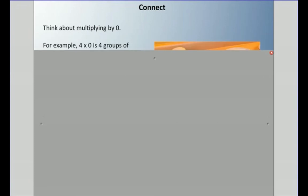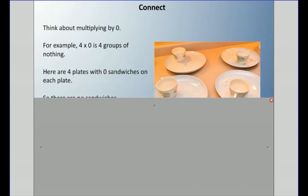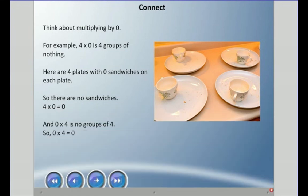What about multiplying by zero? Four times zero is four groups of nothing. If you had four plates with zero sandwiches on them, you have no sandwiches — so four times zero equals zero. Zero times four is also zero. The easiest way to think about it: anything times zero will always equal zero. Even zero times zero equals zero.